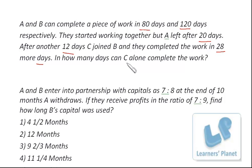You can do this problem without even paper and pen. Now listen carefully. A can complete the work in 80 days and A is leaving after 20 days. That means A has done one-fourth of the work — in 20 days he might have done one-fourth of the work.